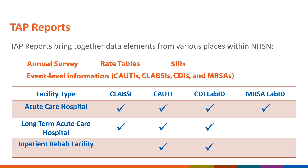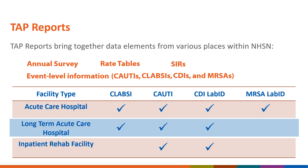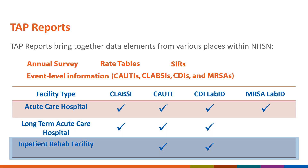TAP Reports are available for each facility type. Acute care hospitals can run CLABSI, CAUTI, CDI LabID, and MRSA LabID TAP Reports. For long-term acute care hospitals, there are CLABSI, CAUTI, and CDI LabID TAP Reports. Inpatient rehab facilities can run CAUTI and CDI LabID TAP Reports.